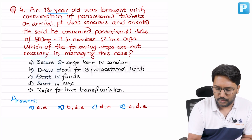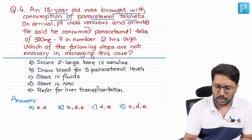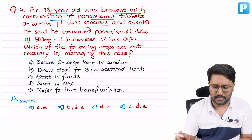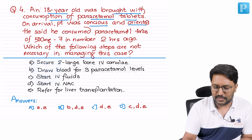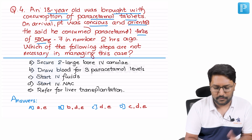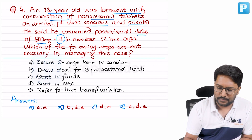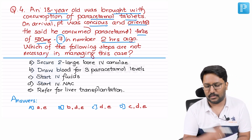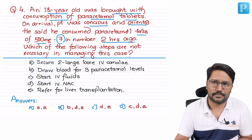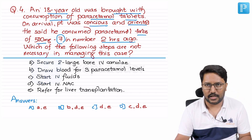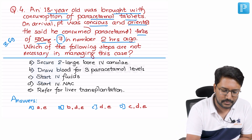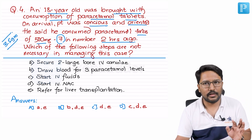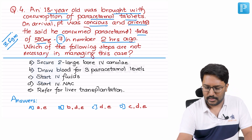An 18-year-old was brought in with consumption of paracetamol tablets. On arrival, the patient is conscious and oriented, so there is no encephalopathy. He consumed 500mg paracetamol tablets, seven in number, two hours ago. That's 500 times seven, which equals three and a half grams.